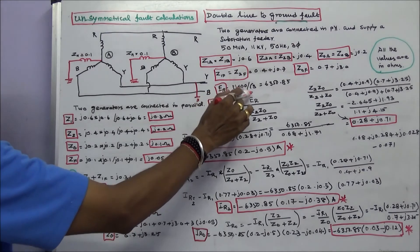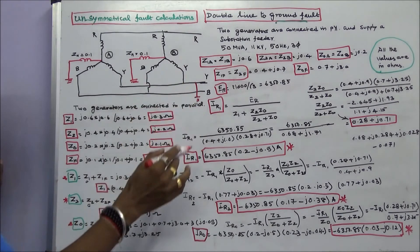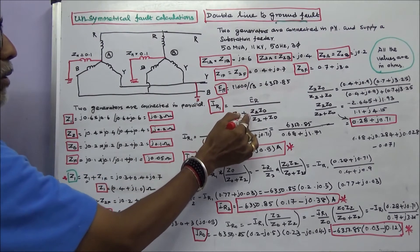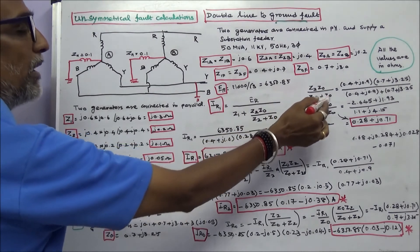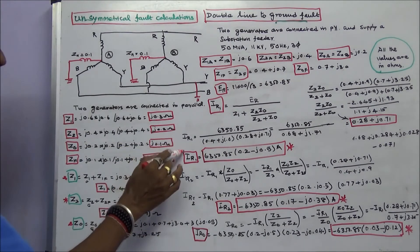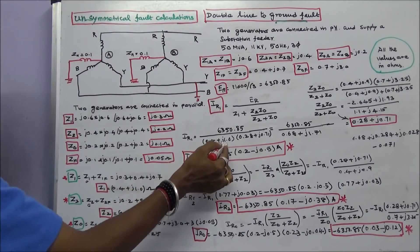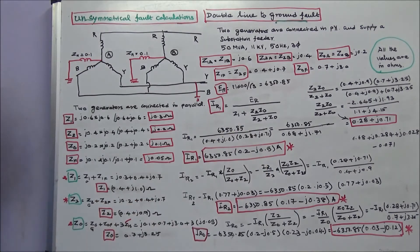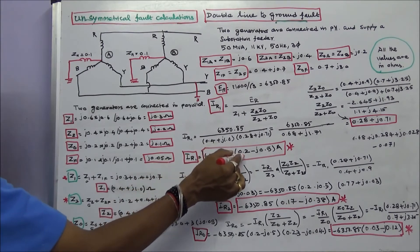Er equals 11000 divided by root 3, which equals 6350.85 volts. Now we calculate IR1, IR2, and IR0. IR1 equals ER divided by Z1 plus the parallel combination of Z2 and Z0, where Z2 times Z0 divided by Z2 plus Z0 equals 0.28 plus J0.71 ohms. Therefore IR1 equals 6350.85 times (0.2 minus J0.5).